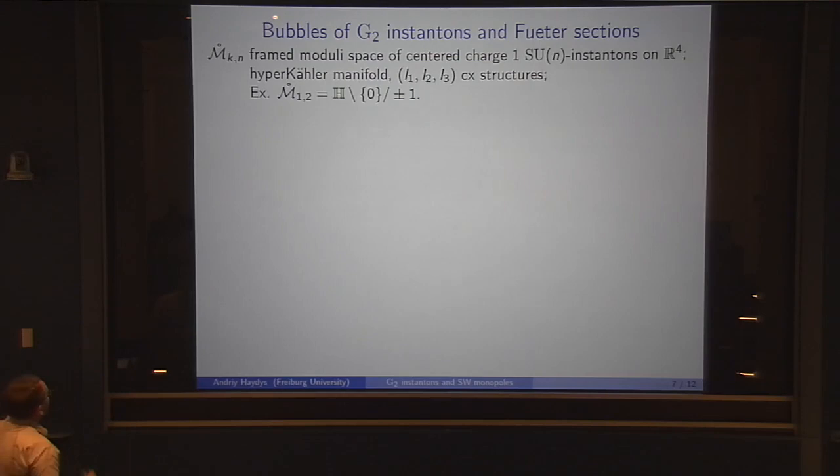The question due to Donaldson and Segal is: is there a way to compensate for jumps of the number of G2 instantons? That's where Seiberg-Witten monopoles will be perhaps somewhat helpful. But before going to that, we need to review some details about bubbles of G2 instantons, and that's where Fueter sections will play a role. What are Fueter sections? M_k,n is a framed moduli space of centered charge 1 SU(n) instantons over R^4.